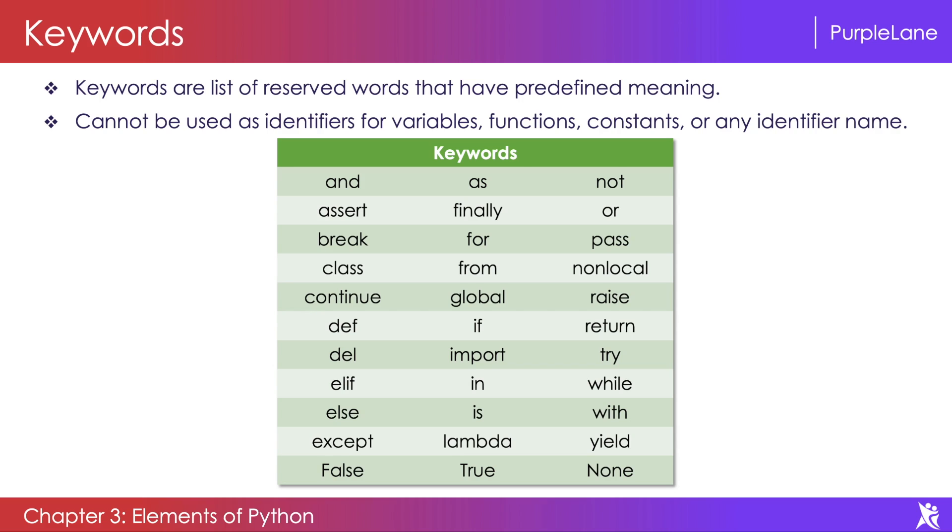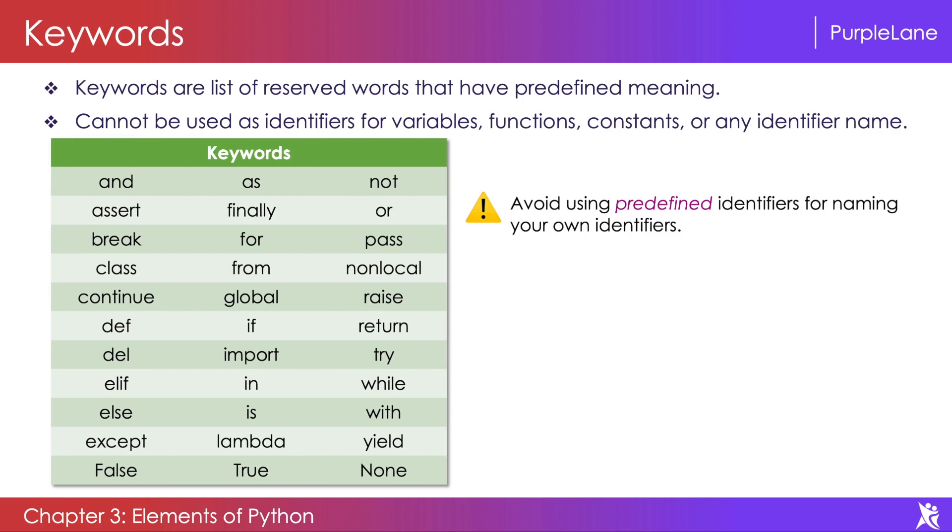Apart from these keywords, you should also not use the predefined identifiers for naming your own identifiers. So Python provides us with some predefined identifiers like built-in data types where we have int, float, list, string, and so on. We have built-in functions like input, print, and so on. Then we have built-in exceptions like file not found error, module not found error, and so on. You should avoid using these identifiers also for naming your own identifiers.